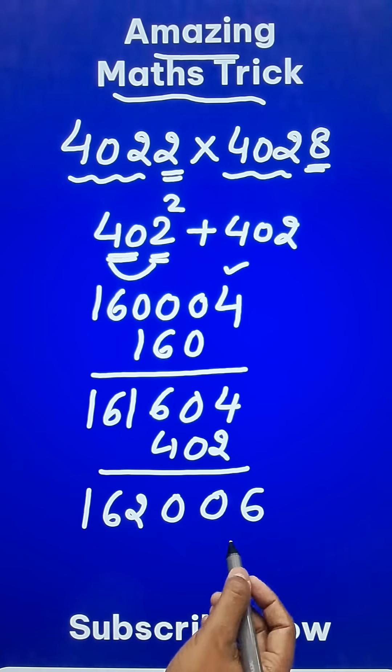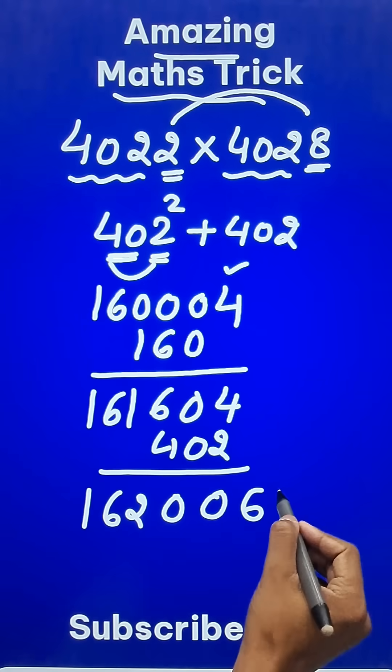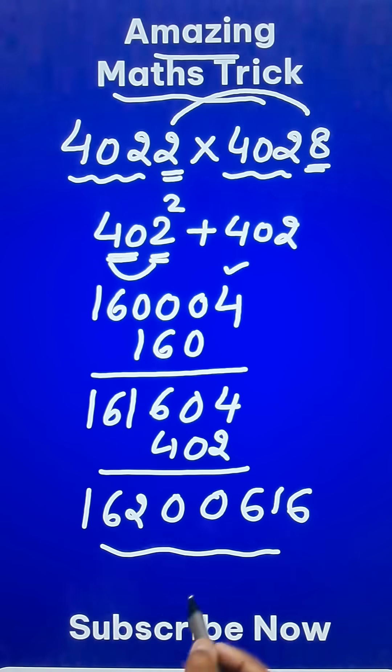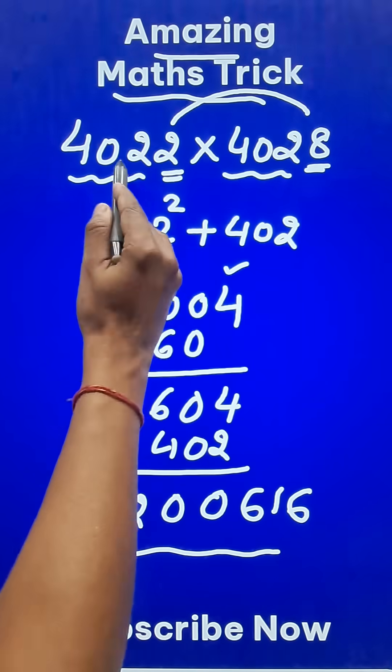Now the final part of your answer, the product of the unit digits is 16. So just suffix 16 to the result and you will be surprised to note that 16200616 is actually the product of these two big numbers.